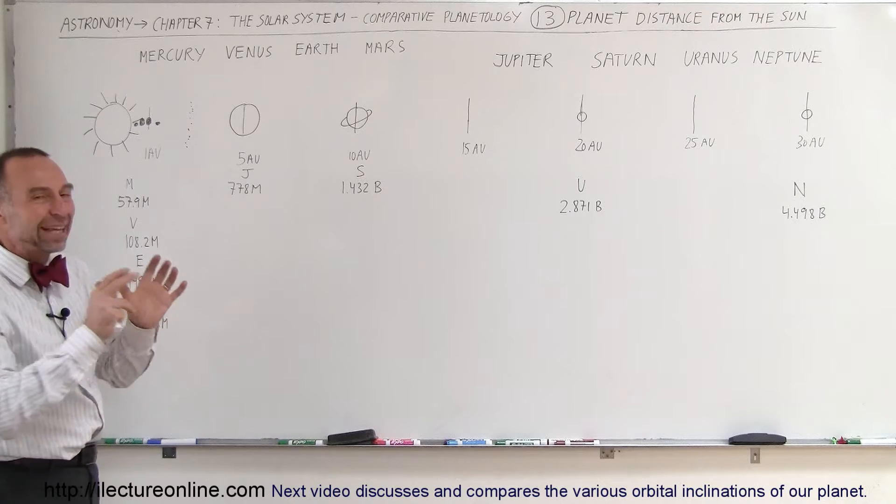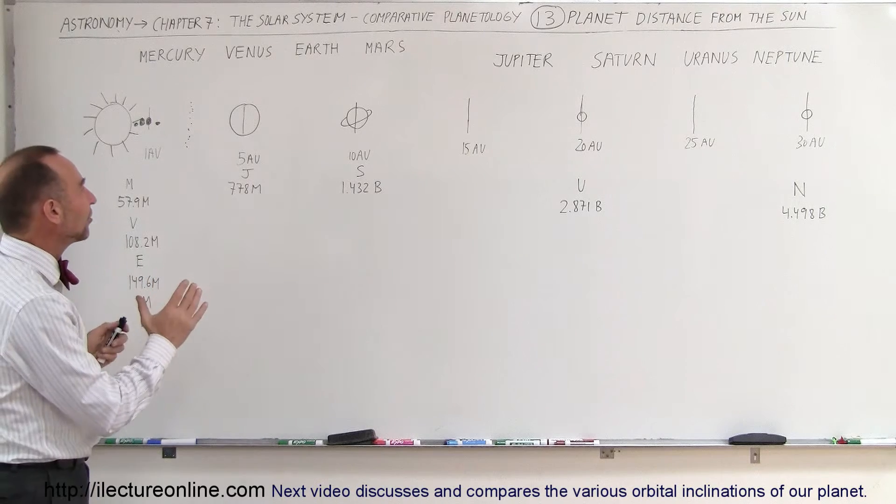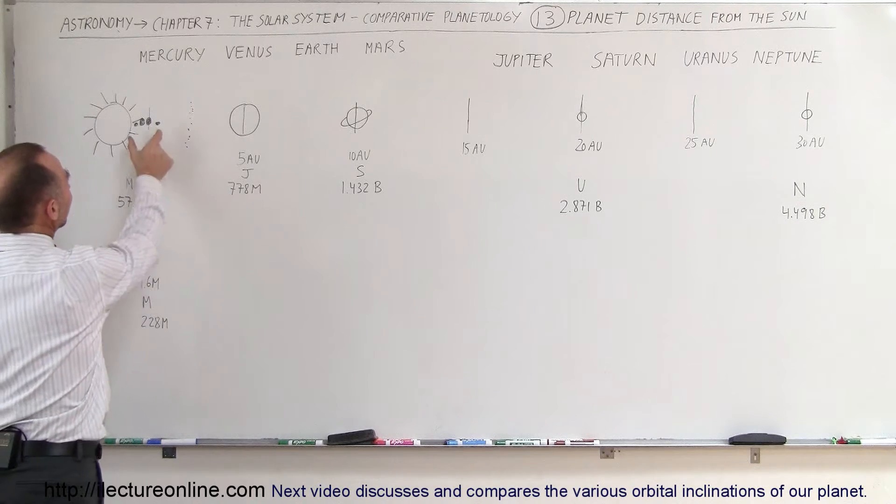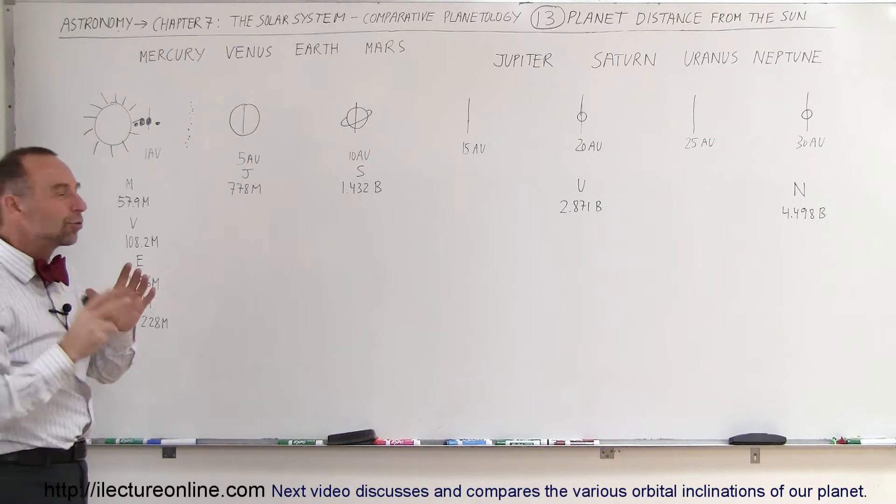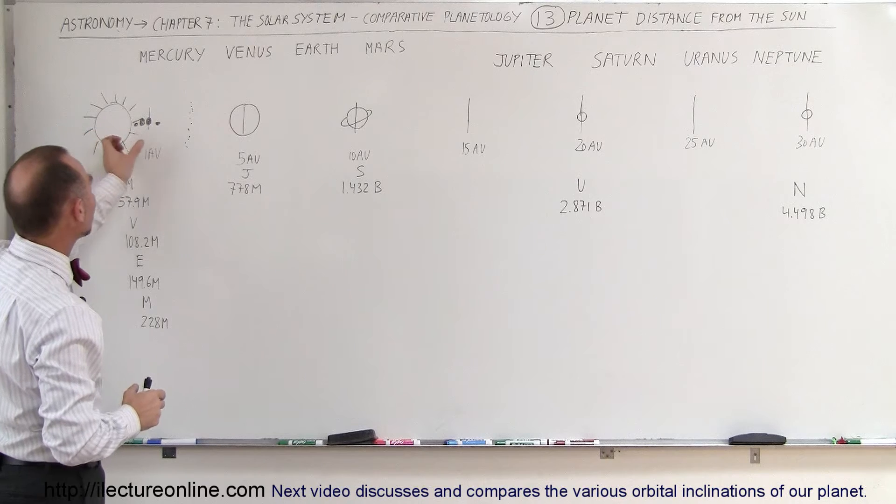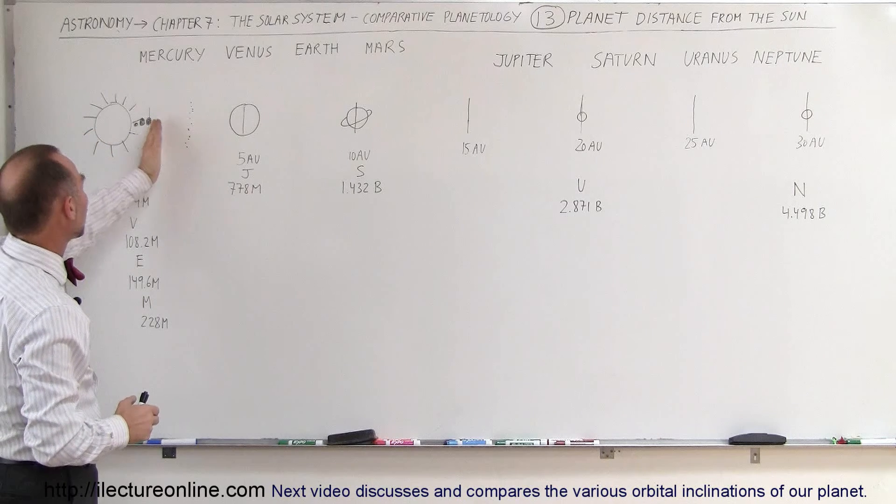Here I've tried to illustrate to you the relative distance from the planets to the Sun, and here the four terrestrial planets which are relatively really close to the Sun. Of course, the proportion and size is a little bit off, but you can see that the four terrestrial planets are really close.